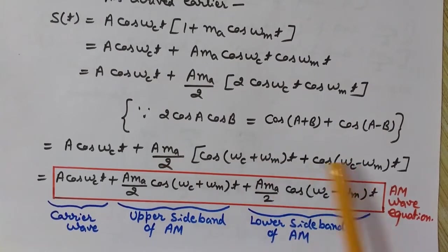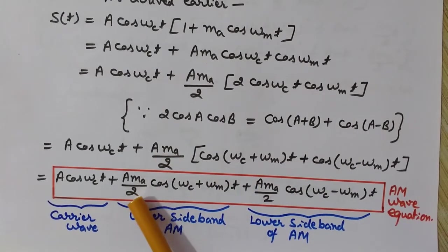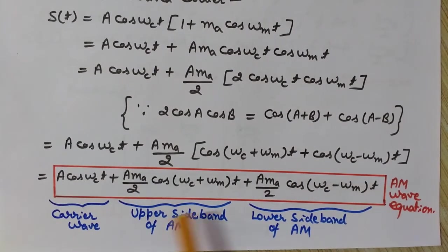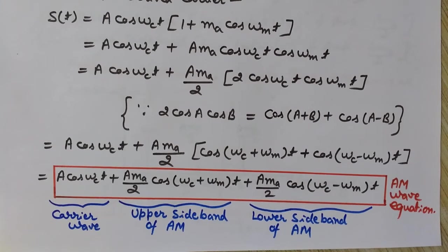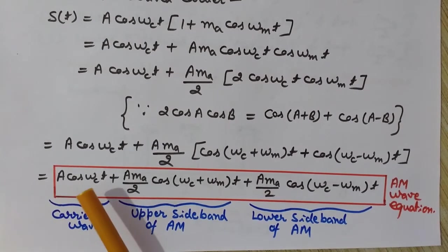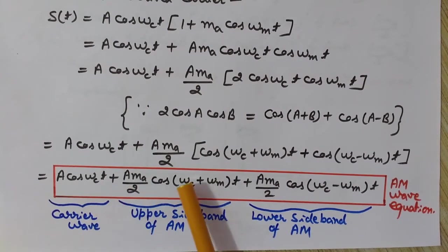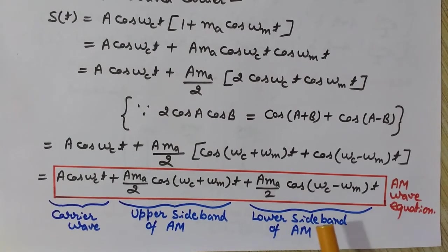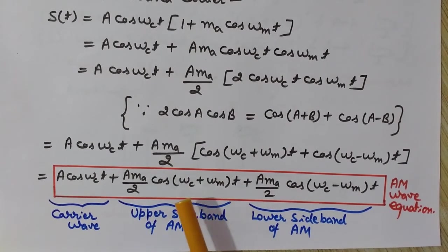The full expression becomes: s(t) = A·cos(ωc·t) + (A·ma/2)·cos((ωc+ωm)t) + (A·ma/2)·cos((ωc−ωm)t). This is the expression for the amplitude modulated wave for single tone. As you can see, it has three parts: the first is the carrier wave, the second is the upper sideband, and the third is the lower sideband.